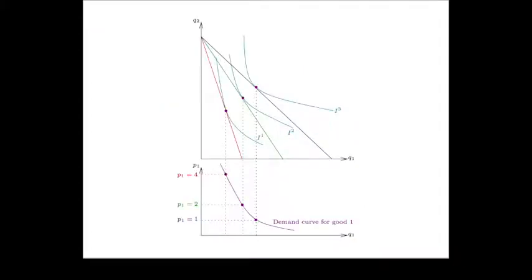How do we get from that to a demand curve? Well it's pretty simple. We just draw another picture right below it. Each point here corresponds to the price that gives us that budget line. In this case P1 equals 4 gives us this budget line. P1 equals 2 gives us this budget line. And P1 equals 1 gives us this budget line.